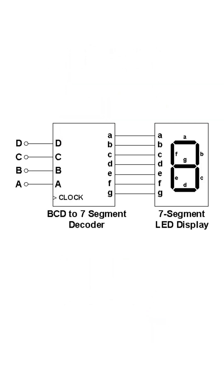To make things simpler, you can use a decoder IC. Instead of controlling each segment separately, you just give a binary input and the decoder lights up the correct segments automatically.